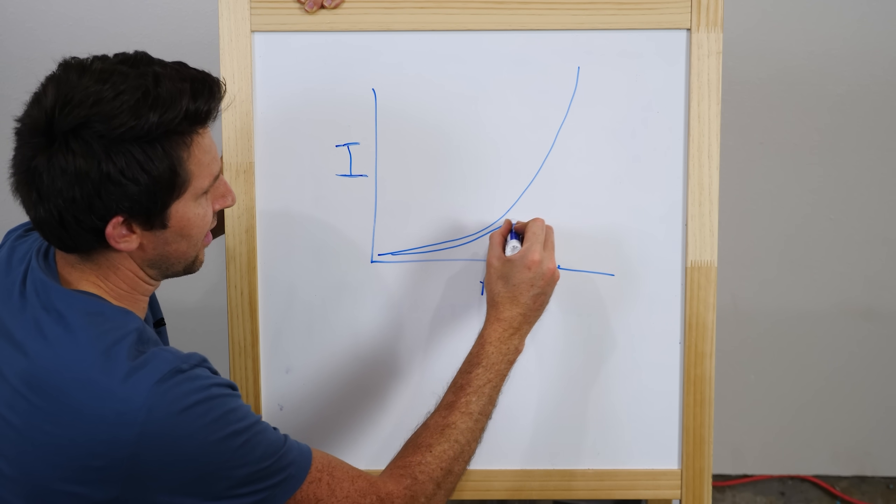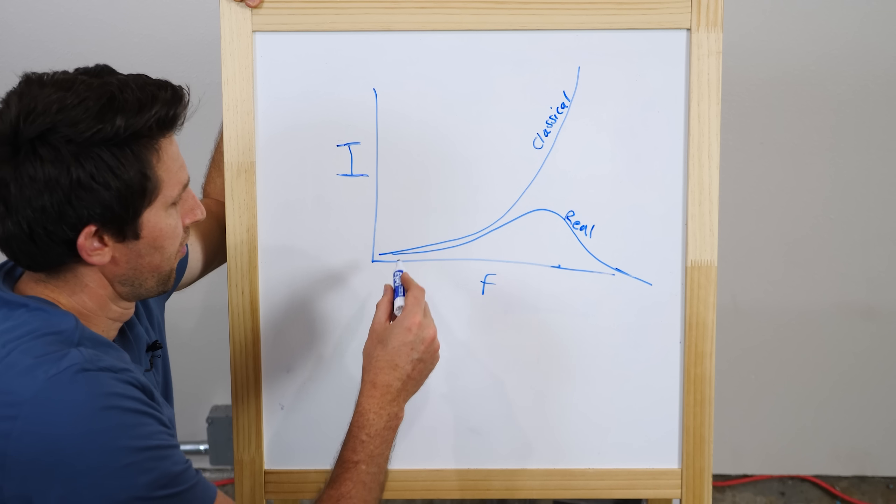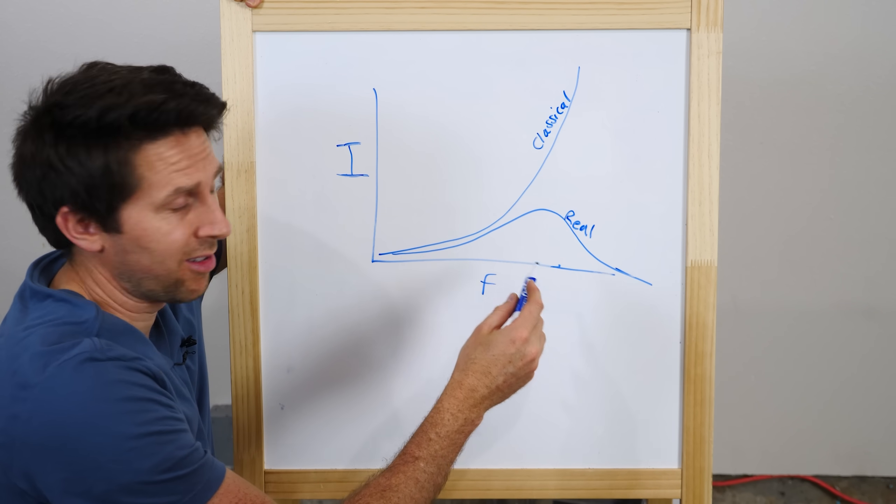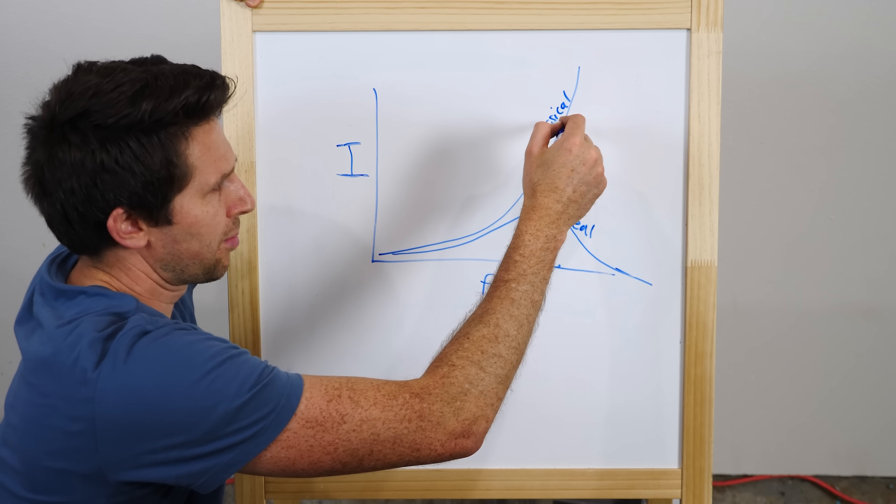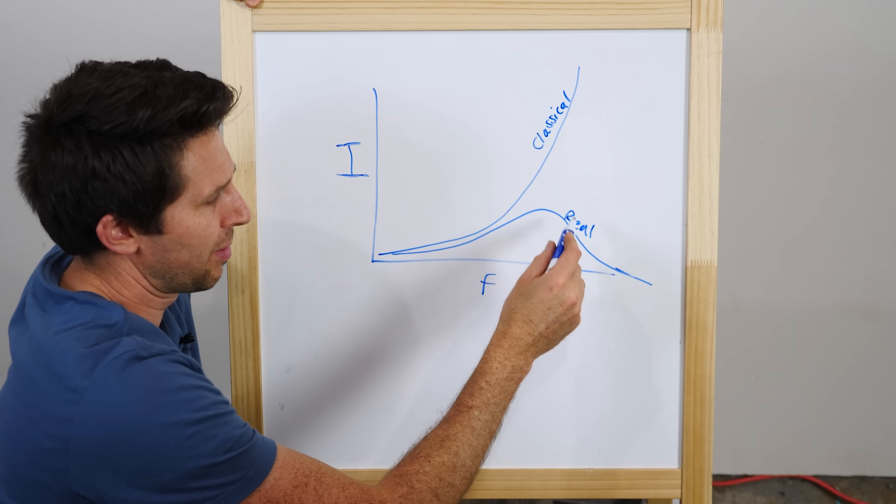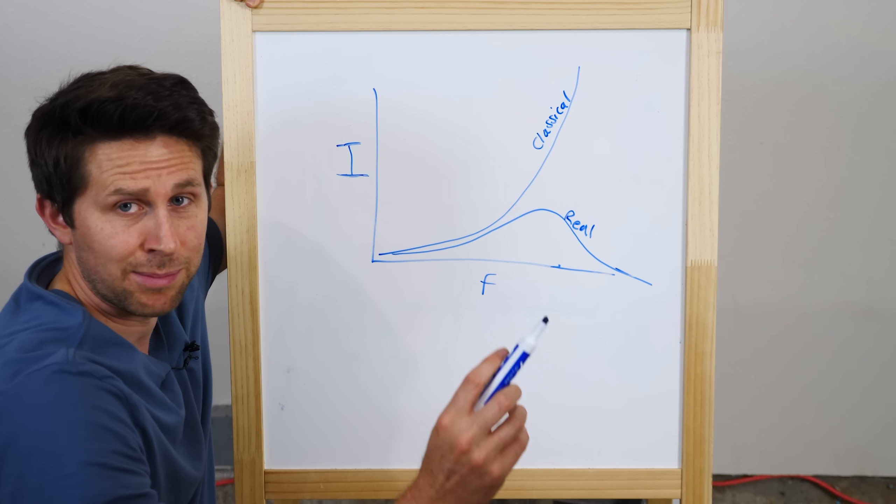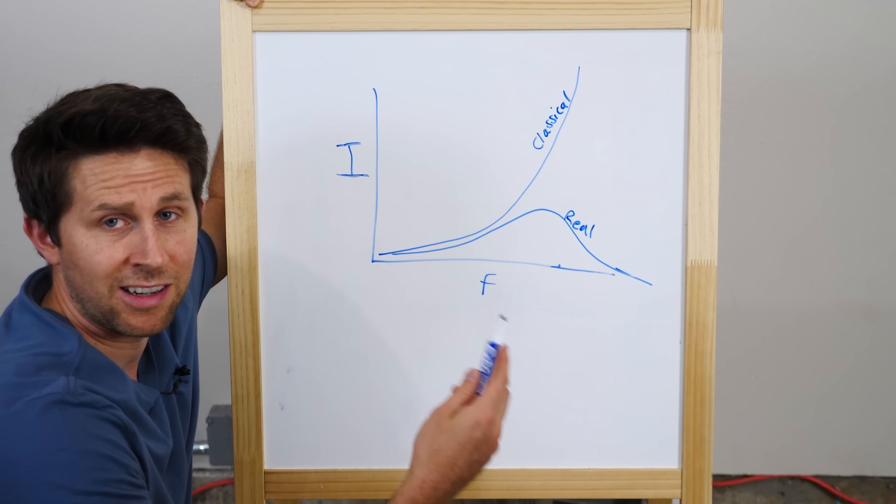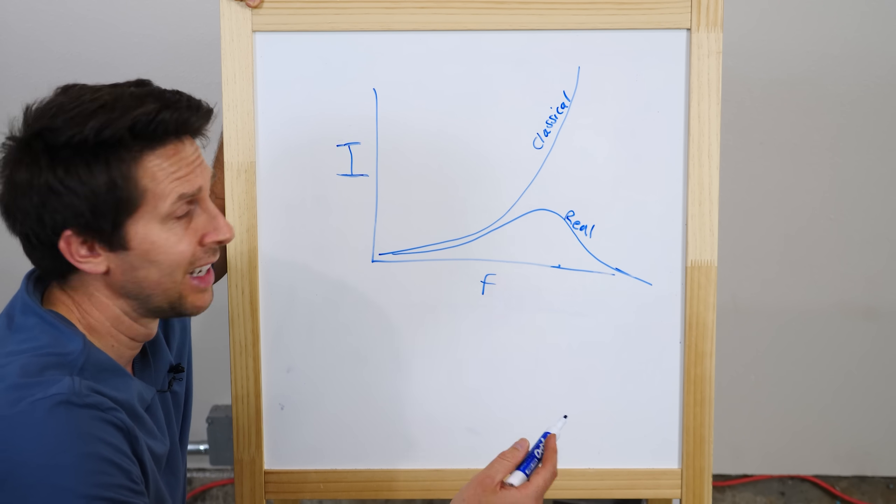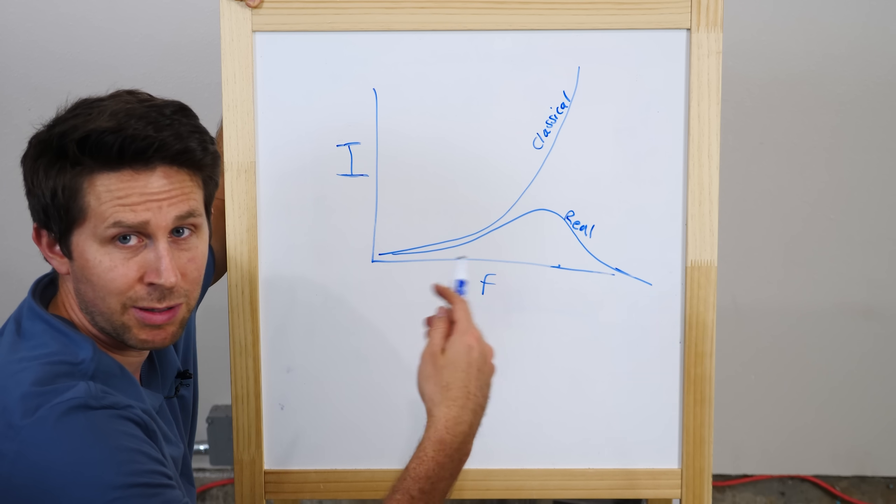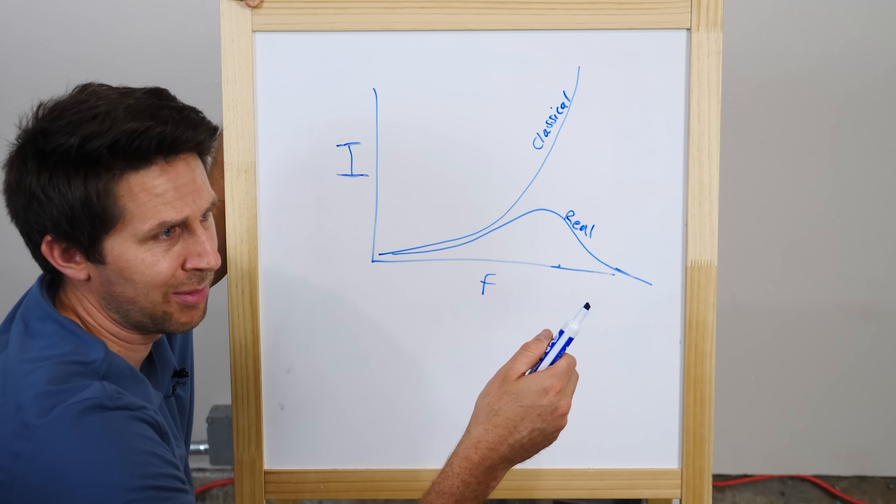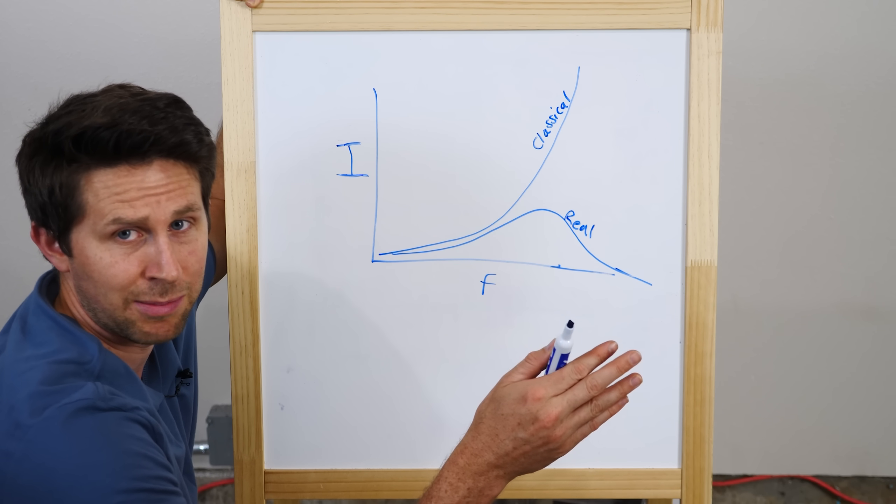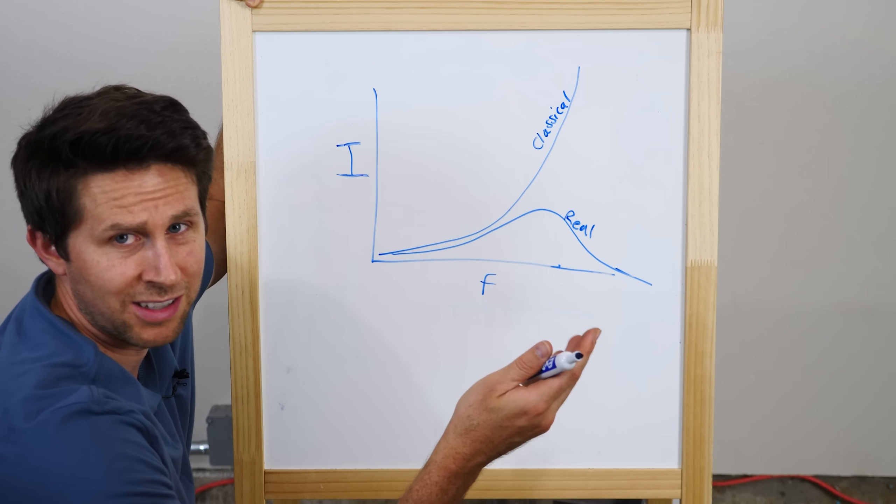This is what it actually looks like. So you can see that these two don't agree with each other. Classical physics predicted that the graph should look like this, but if you really measure it, it looks like this. So something is wrong here. And this is called the ultraviolet catastrophe. And the reason they named it that is because it would predict that if you just heat something up, you should see a lot of ultraviolet light coming off of it. When in reality, you don't.